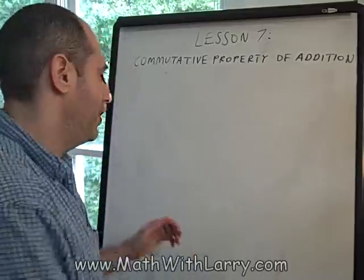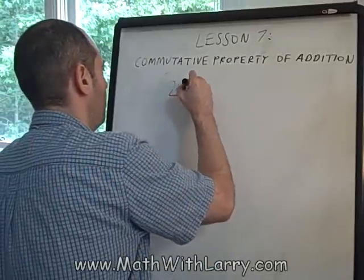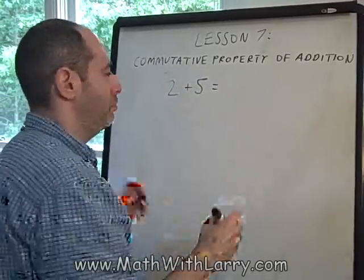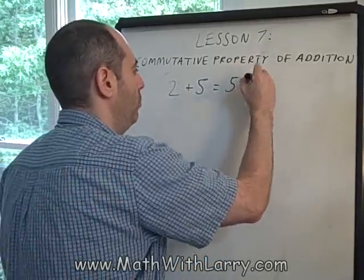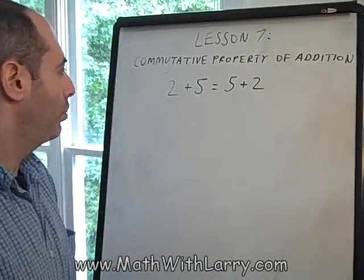We know that when we add, it doesn't matter what order we add our two numbers in. So for example, we know that 2 plus 5 is the exact same thing as 5 plus 2. We're just combining numbers. The order doesn't matter.